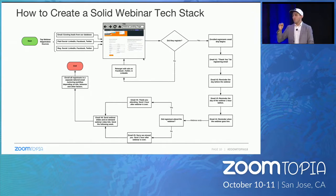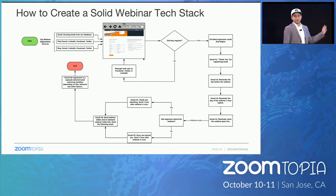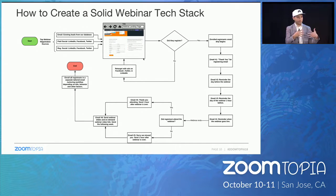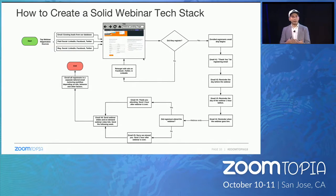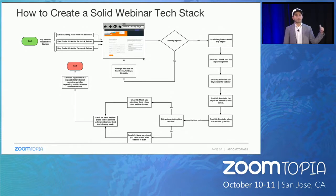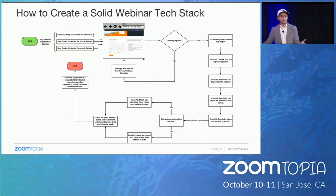So what now? How can you create a solid webinar tech stack? You need to map out your process. What I shared worked for us — but before I went out and bought all those platforms and connected all those integrations, I needed to map out with my team what steps need to happen and what platforms and technologies are needed to run webinars successfully. Map out your webinar process first, then choose your vendors. If you do it backwards, you're doing it wrong.